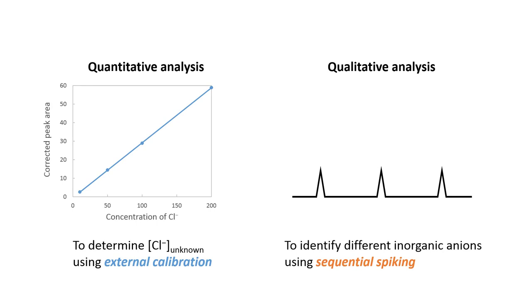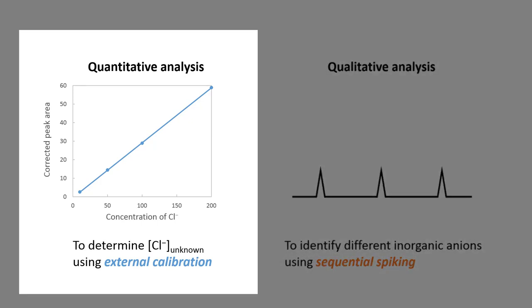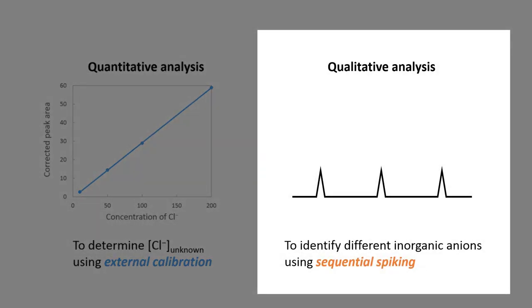In this experiment, we will be using capillary electrophoresis to perform both quantitative and qualitative analysis for the separation of inorganic anions in the mixture. In the first part of this experiment, we will try to determine the concentration of chloride of an unknown sample using external calibration method, which I believe most of us are familiar with since CM1191. In the second part of the experiment, we will try to identify different inorganic anions present in the solution using sequential spiking method.